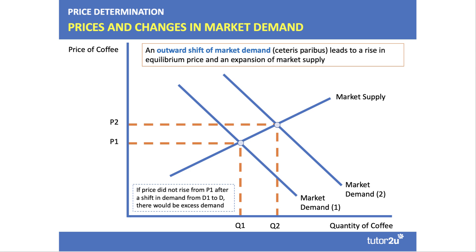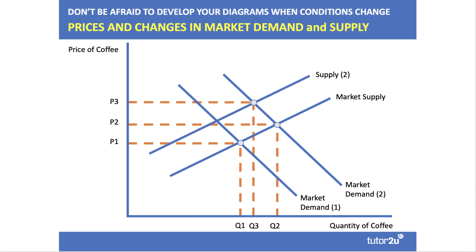Here's an outward shift of demand for coffee — the price goes up from P1 to P2 in equilibrium. If the price did not rise from P1 after the shift in demand, there would be excess demand in the market. So an outward shift of demand causes an expansion along the supply curve.